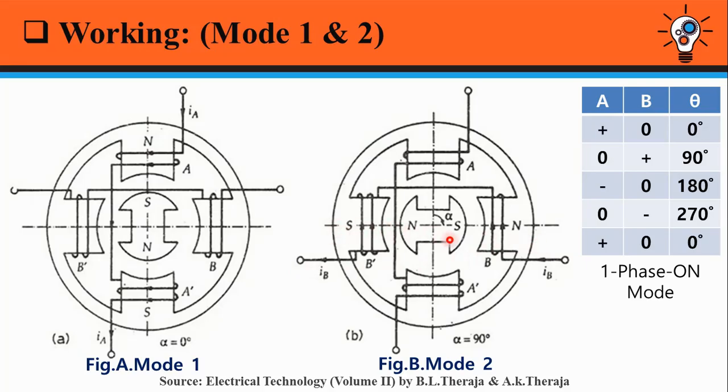Again, the south pole of the rotor is attracted towards the north pole of the stator formed due to the positive IB current. Therefore, rotor rotates by angle alpha, that is 90 degrees.